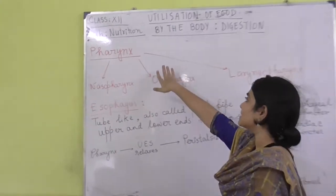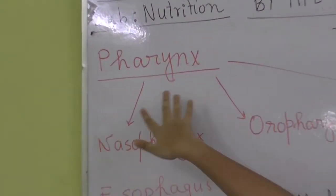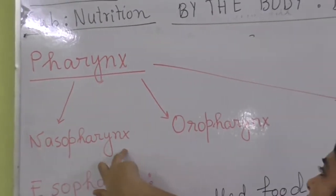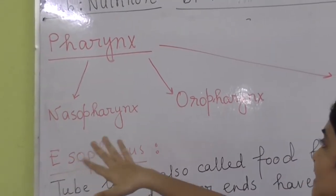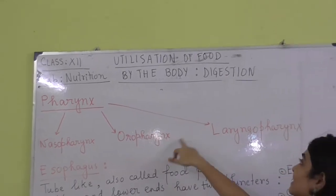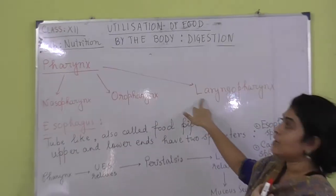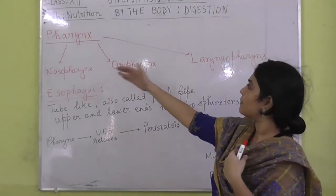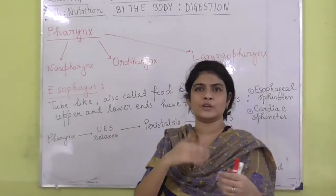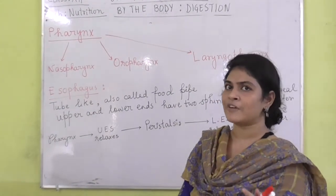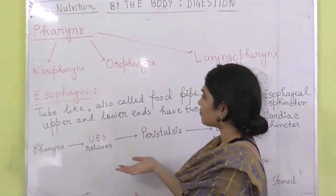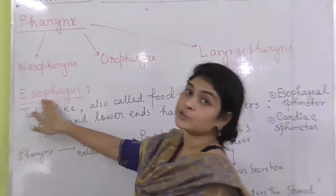Next we are starting the pharynx. There are three parts of the pharynx: the nasopharynx, the oropharynx, and the laryngopharynx. All three parts aid in the passage of food; they do not have any direct active function in the process of digestion.